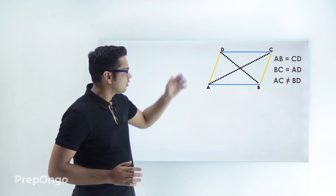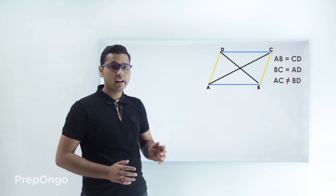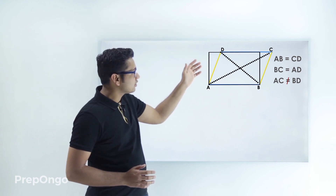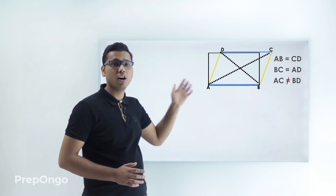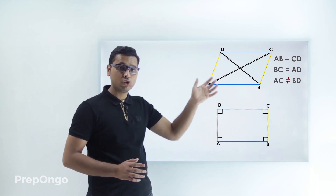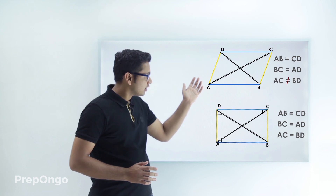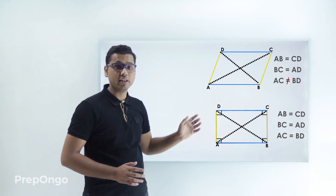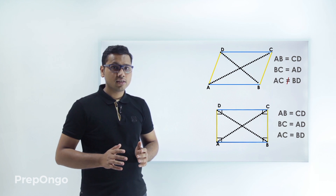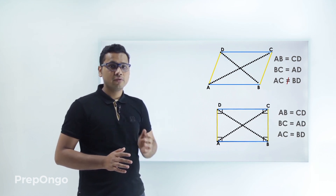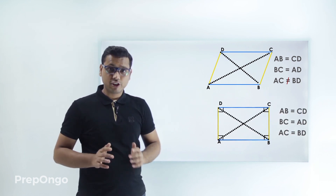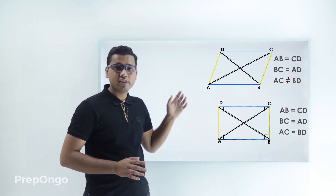Now if I have to make a rectangle out of this parallelogram, what should I do? In case of a rectangle all four angles are 90 degrees. If I pull this side, you will find out that this parallelogram has now converted into a rectangle. The opposite side lengths are equal and the diagonal lengths AC and BD are also equal. So if opposite sides are equal it's a parallelogram, and if the diagonals are also equal then it's a rectangle.